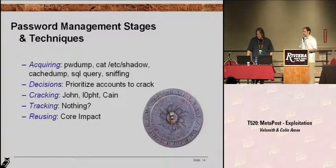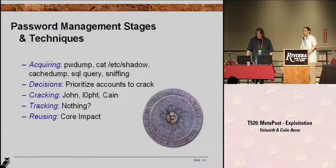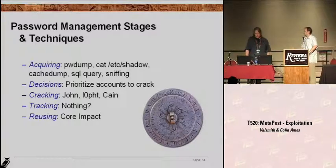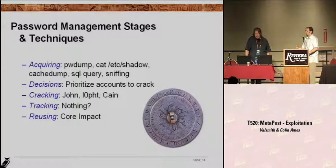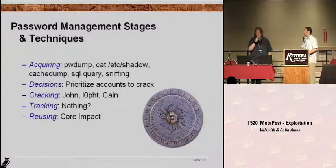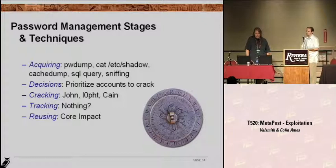There are many stages. The first ones are, of course, acquiring hashes or cached credentials on a host, listing tokens, what's available there. Several tools we can use, some choices here. Then you have to prioritize, make some decisions, decide what you want to do with it, and then take your choices and crack them or use rainbow tables or however you want to approach these passwords. We don't want to talk about cracking here — people do it, it's not hard. We want to track that so you can look back at what you've done, where you're going, as well as reuse it.